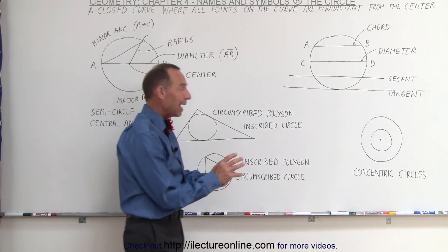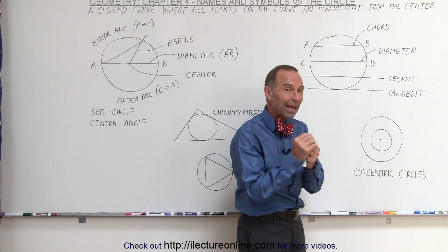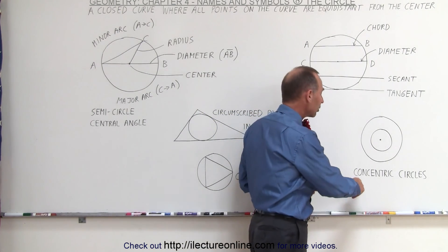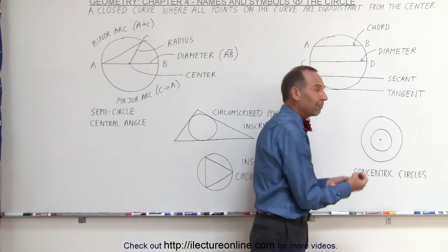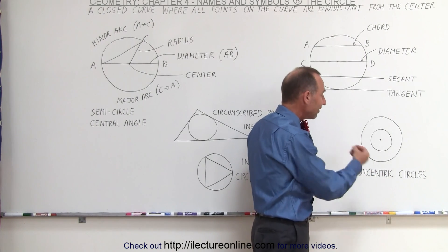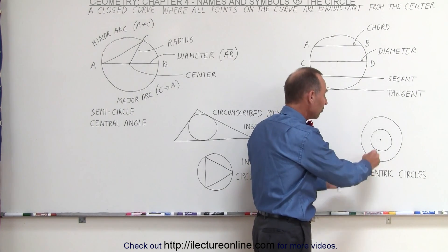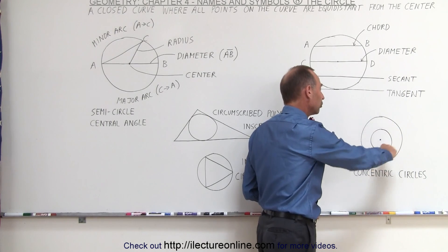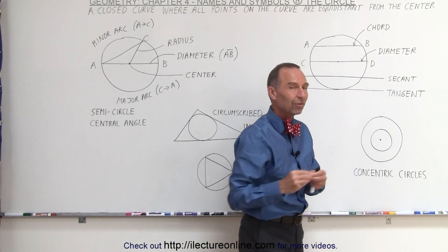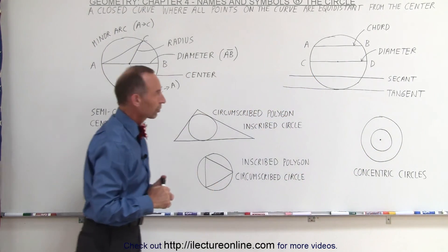And finally, what if we have two circles that have the same center? Those are called concentric circles. They have the same center. Co and centric is the word that determines that it's the same center, so therefore the two circles have the same center. They're called concentric circles.